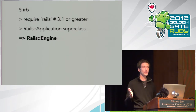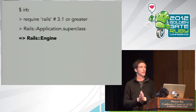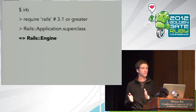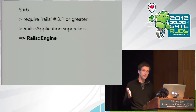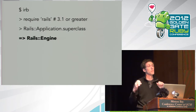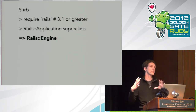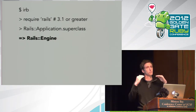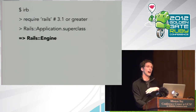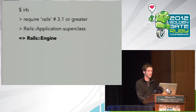You get a full MVC stack with a Rails engine. You can have models, controllers, views, and assets — JavaScript, CSS, images. It's basically a little Rails application you can plug into another Rails engine. Rails engines can themselves have Rails engines plugged into them, so you can build engines into engines, then build those into a Rails application, which itself is a Rails engine.